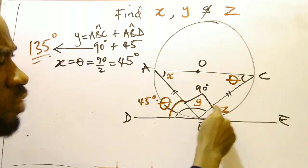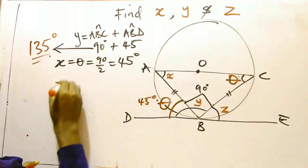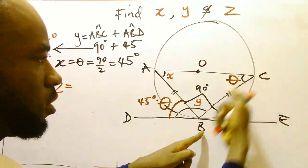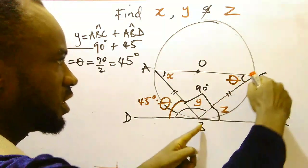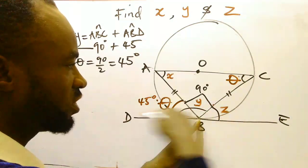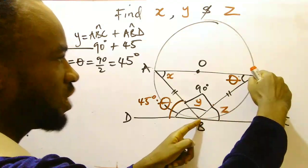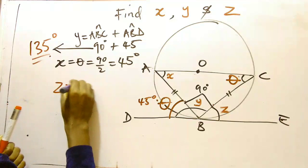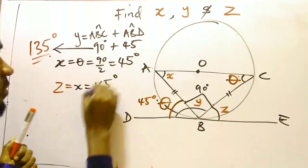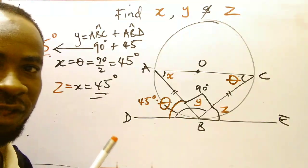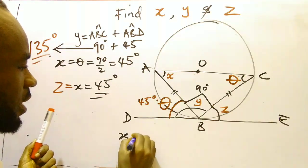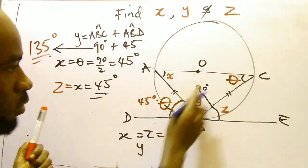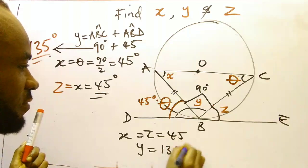Now the same thing happens also to Z. Our value for Z will also be equal to X because this is a chord. Based on my explanation, this chord forms an angle with a tangent, so it will be equal to the angle in the alternate segment. Which means that Z and X are equal. So our angle Z is equal to X and our X is 45 degrees. So we have gotten all our answers. Our answer is that X and Z is equal to 45, while our angle Y is equal to 135 degrees.